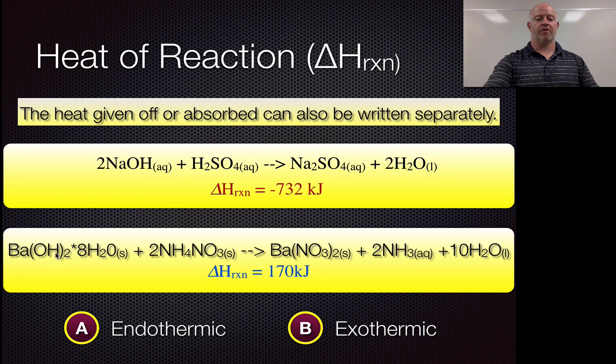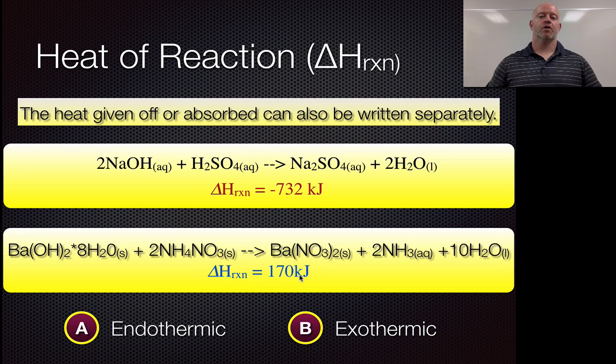Same thing down here, where we have the barium hydroxide reacting with ammonium nitrate. We now get a heat of reaction this way. Again, we see exothermic up here, and we see endothermic down here. So all this is doing is putting a numerical value to the energy change based off of these balanced chemical equations.